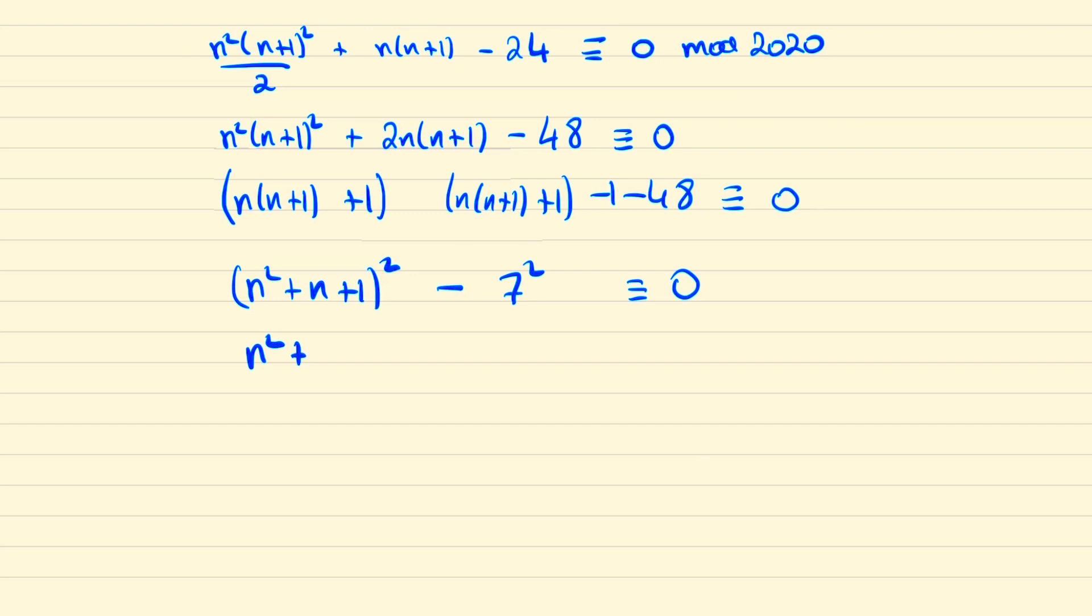So this would be n squared plus n plus 8 times n squared plus n minus 6. And we can factorise again the second of these two quadratics as n plus 3 times n minus 2.